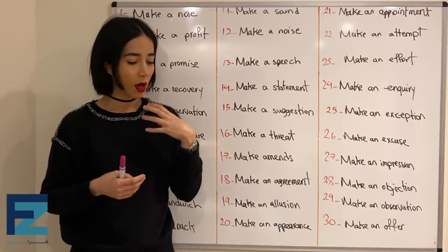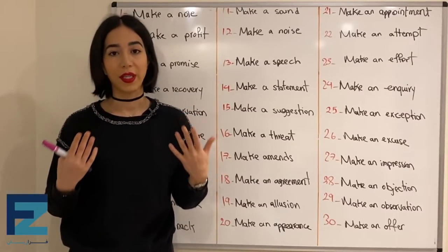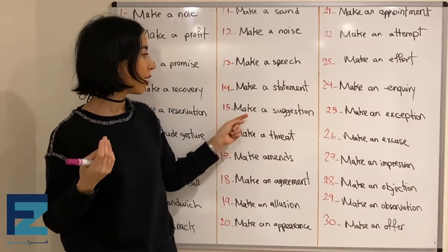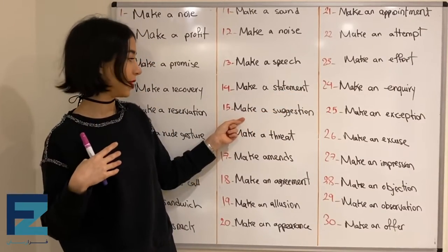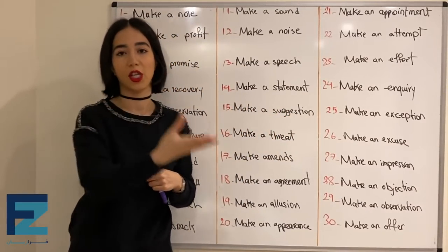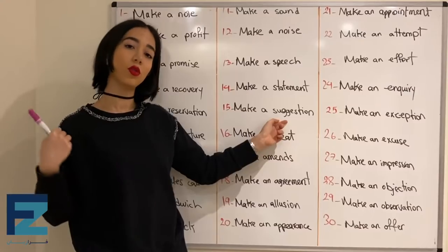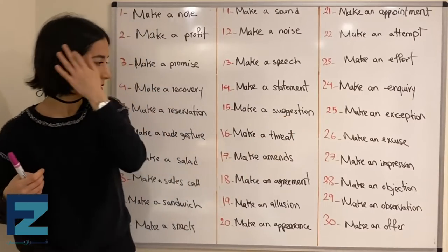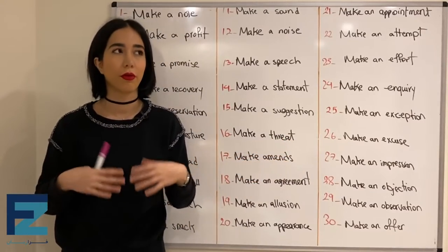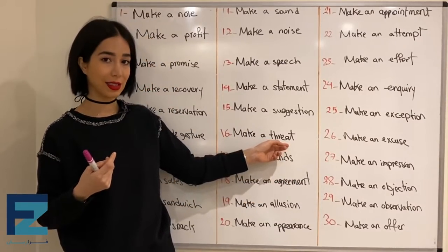Number fifteen: make a suggestion — means to suggest. هم suggest گفته میشه هم suggest. Number sixteen: make a threat — means to threaten someone, تهدید کردن. The verb form is 'threaten' — with e-n at the end.